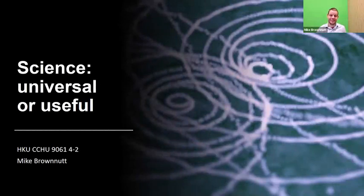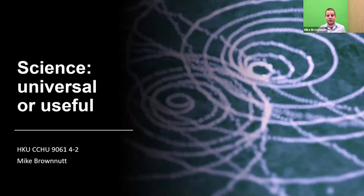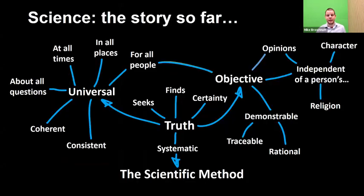Welcome to the second of this week's videos. We've just looked at objectivity and now we're going to look at universality in science. Here's a recap of where we've got to so far, just for those of you who are trying to draw the grand thread through: this is our enlightenment vision of science, this is what we're hoping for.